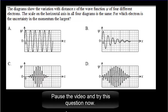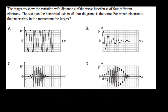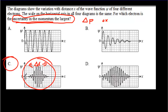Here's an IB question: where do we get the largest uncertainty in momentum? You get the largest uncertainty in momentum when you have the smallest localization of the particle. In option C, we have the most localized particle — delta x is the smallest — so that gives the largest uncertainty in momentum. The best answer is C.